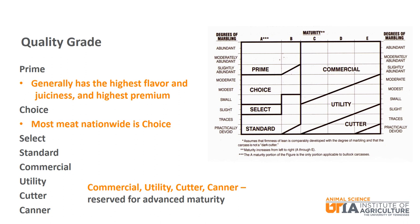There are eight possible quality grades for beef cattle: Prime, Choice, Select, Standard, Commercial, Utility, Cutter, and Canner. Generally, Prime is the best, with Canner being the worst.